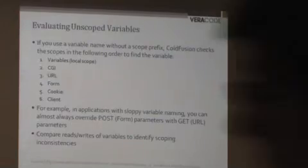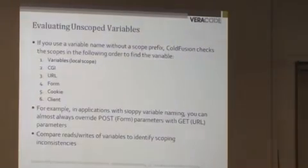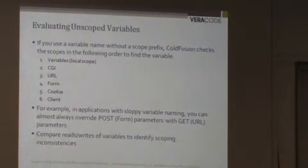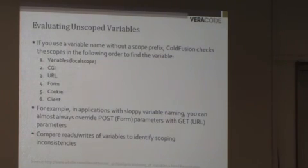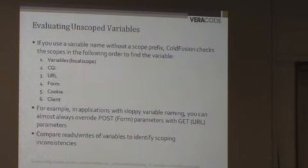Number one, look for anything where a scope is not explicitly supplied, because that's a bad coding practice in general. But really look for mismatches between reads and writes. So if somebody sets a variable as a session, or if they set the variable with a scope, but then they read it later without a scope, that's a warning sign to watch out for, because there may be mismatches in what actually gets read later because of the search order.